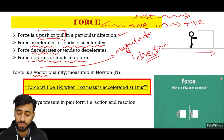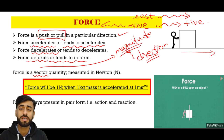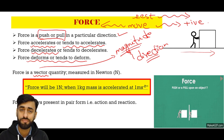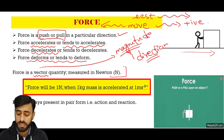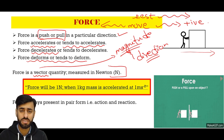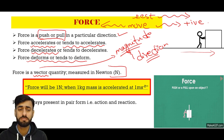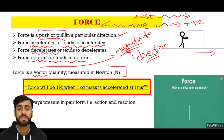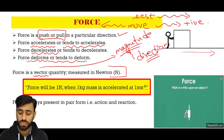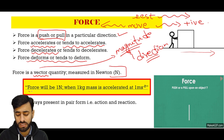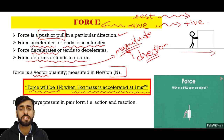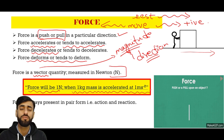These two things are very important about vector quantity: we must consider not only the magnitude of force but also its direction. We measure it in the unit Newton. One Newton is the force that, when applied on a mass of one kilogram, produces an acceleration of one meter per second squared — that is considered one Newton.